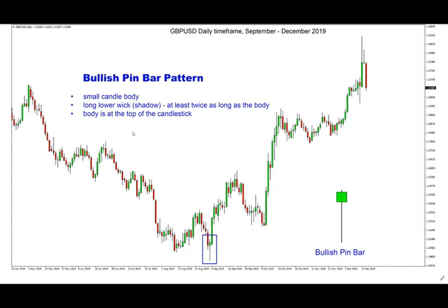Starting with the bullish pin bar, the first condition for the pattern to be formed is a small candle body, and then we need a long lower wick or shadow which is at least twice as long as the body. This is the bullish pin bar so the wick is a lower wick — it appears at the lower part of the candlestick bar and the body appears at the upper part of the candlestick bar.